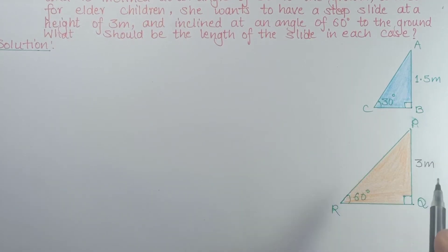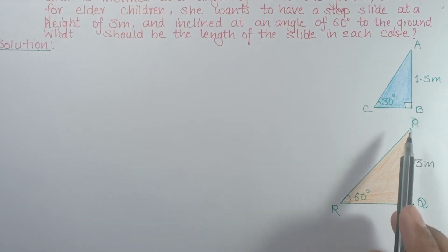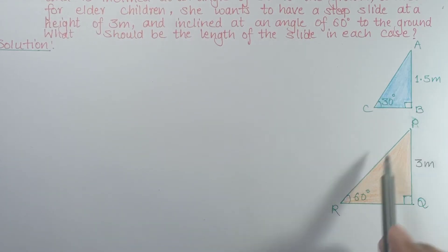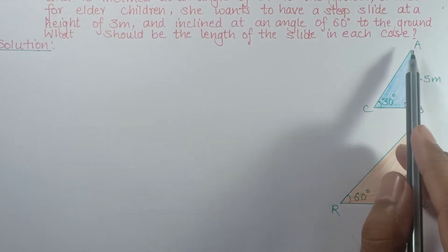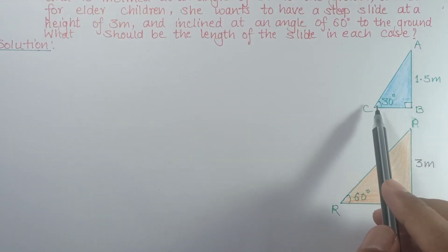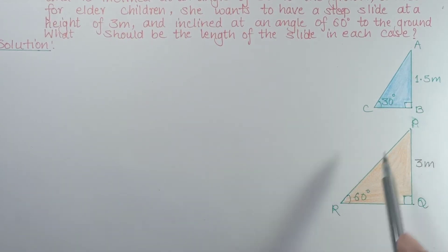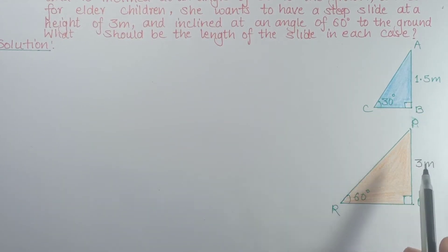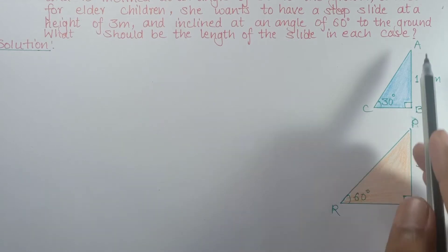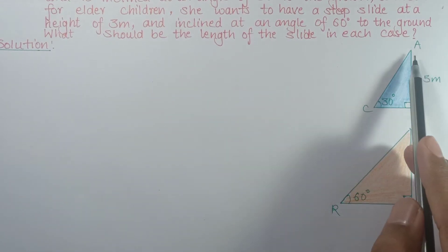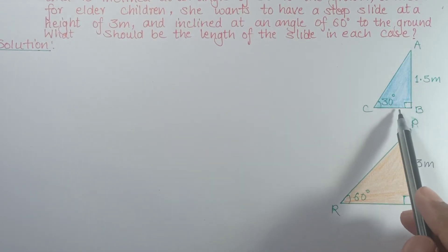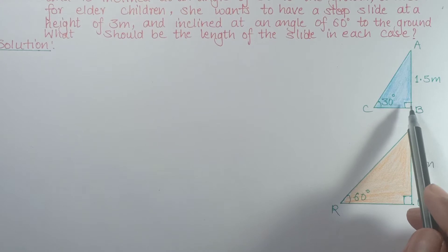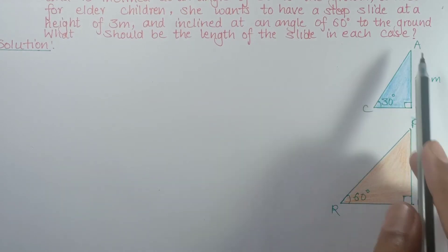There are two cases, and in both cases the given information is the height. We need to find the length of the slide. The slide forms a triangle shape — this is the height, and this is the ground. The height and ground meet at 90 degrees.